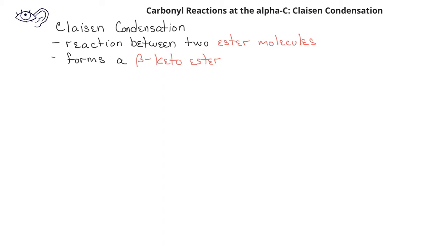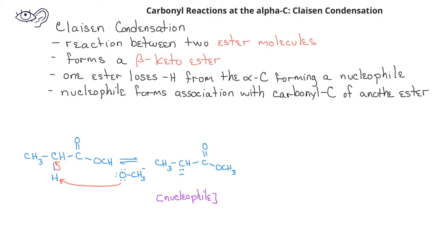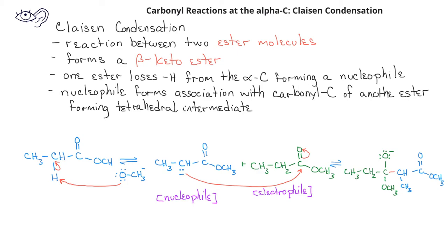As with aldol additions, one of the esters loses a hydrogen from its alpha carbon, forming a nucleophile. This nucleophile then forms an association with the carbonyl carbon of a second ester molecule, forming the tetrahedral intermediate that we're used to seeing in nucleophilic acyl addition reactions.